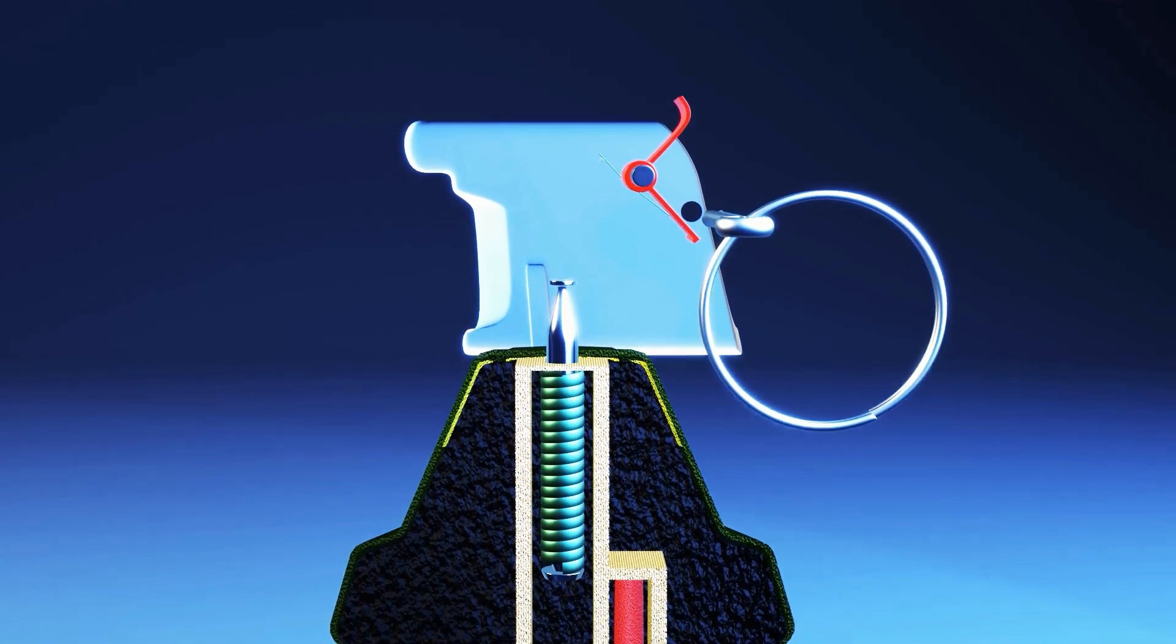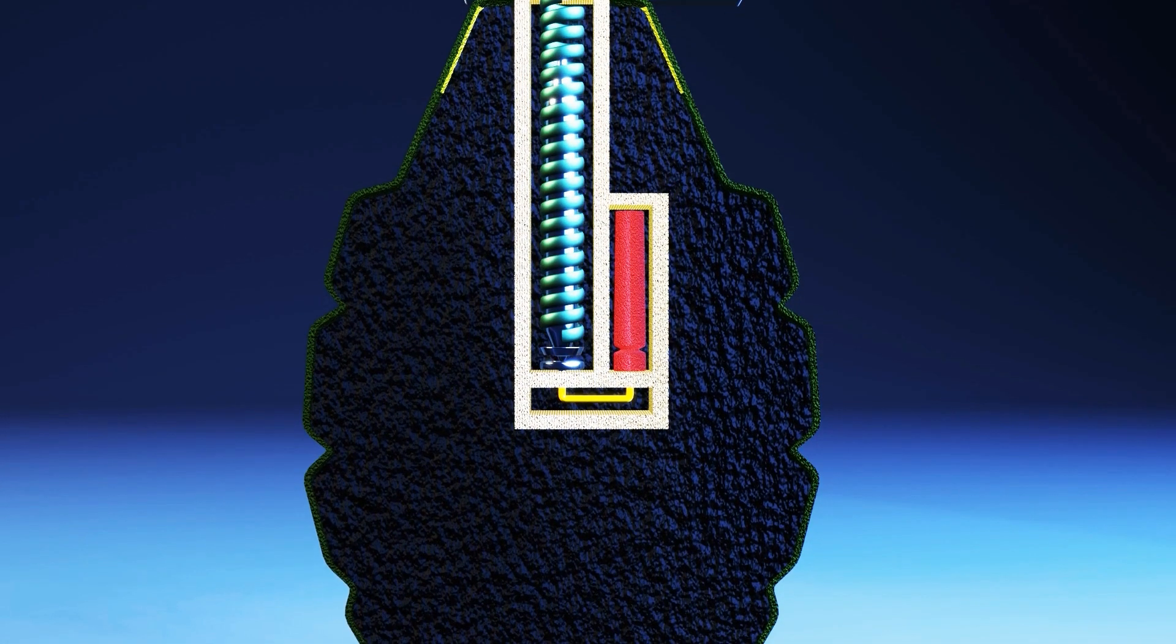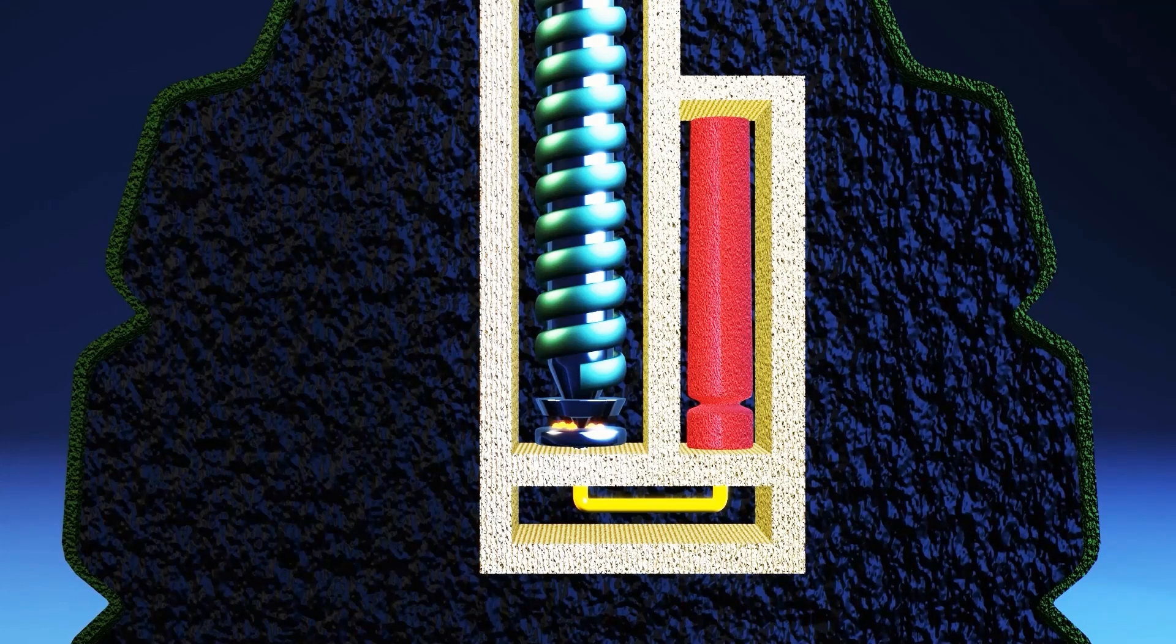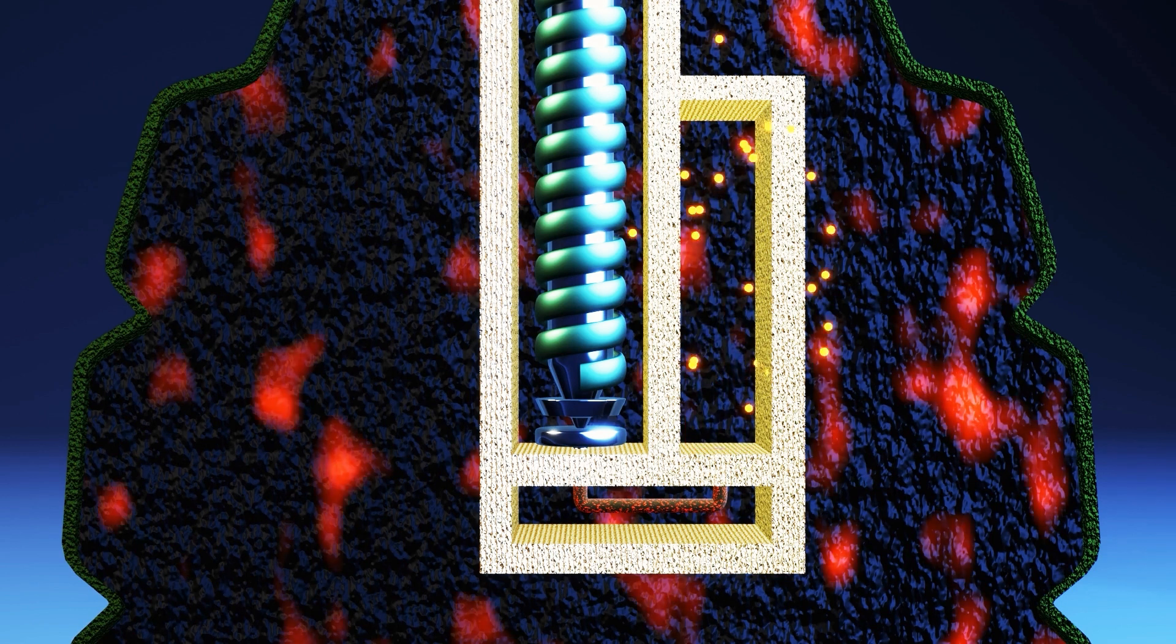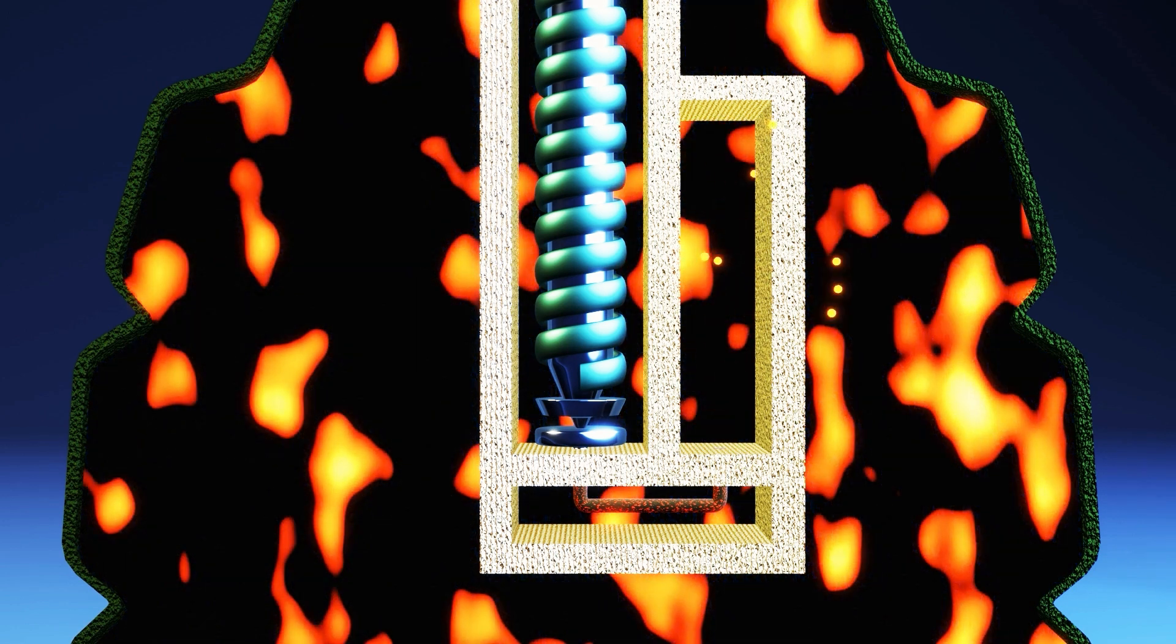The spring pushes the striker down against the percussion cap. The impact creates a spark that ignites the slow-burning material in the chemical delay. In about four seconds, the delay material burns all the way through. The burning material at the end of the delay ignites the detonator, setting off an explosion inside the grenade.